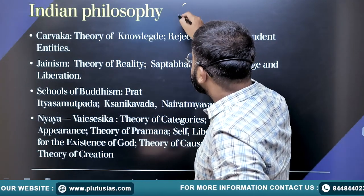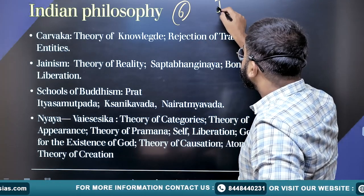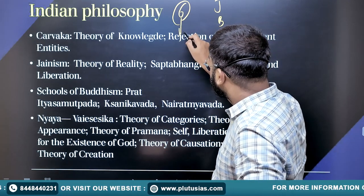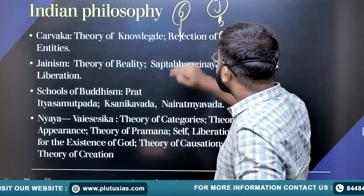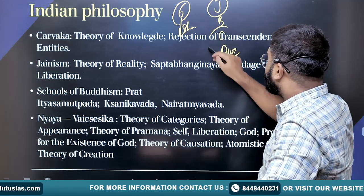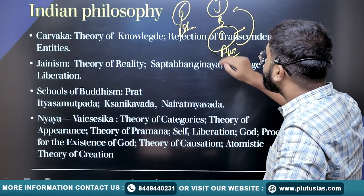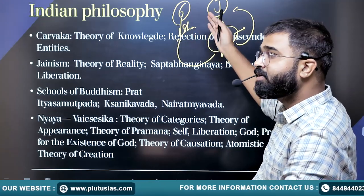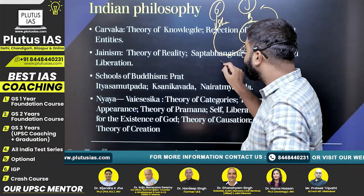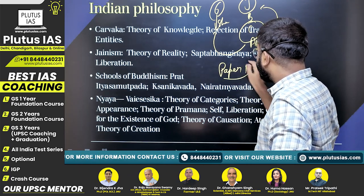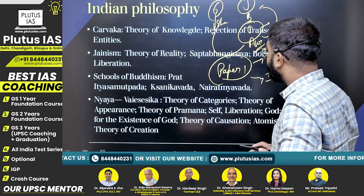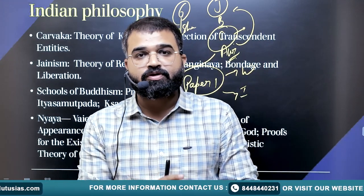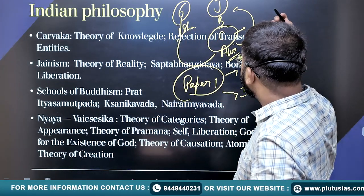In Indian philosophy, there are six orthodox schools, and alongside them are Jainism, Buddhism, Charvak, and Sri Aurobindo. Each school is connected to the others through criticism — for example, Jainism was criticized by Shankaracharya, and Charvak was criticized by Jainism as well as the six orthodox schools. So each philosopher is related to other philosophers, and this is the key trick in paper one for both Western and Indian philosophy.